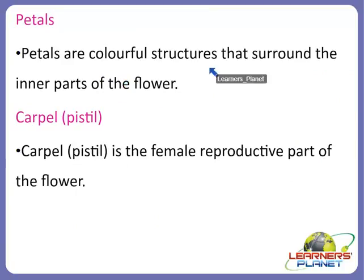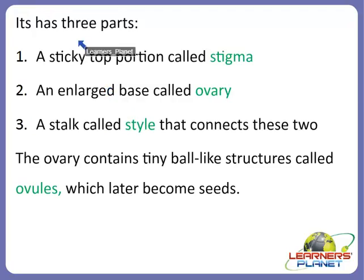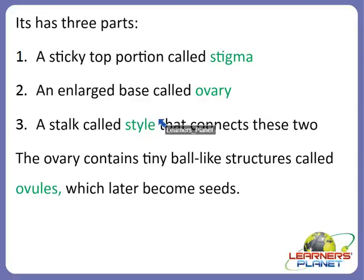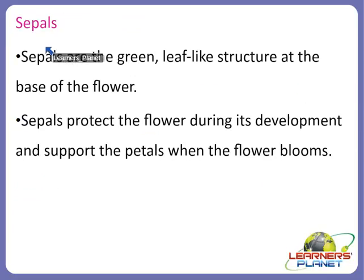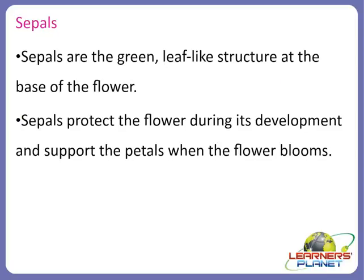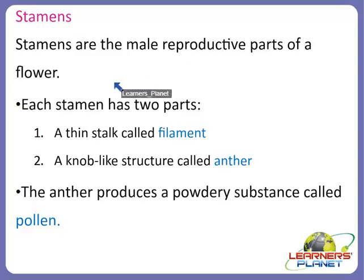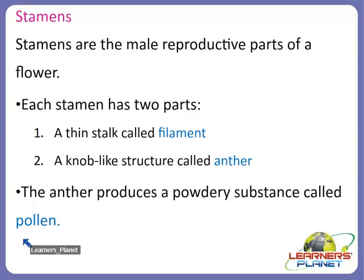To review: petals are colorful structures that surround the inner parts of the flower. The carpel or pistil is the female reproductive part of the flower with three parts — a sticky top portion called stigma, an enlarged base called ovary, and a stalk called the style that connects them. The ovary contains tiny ball-like structures called ovules which later become seeds. Sepals are green leaf-like structures at the base of the flower. Stamens are the male reproductive parts; each has a thin stalk called the filament and a knob-like structure called the anther, which produces pollen.